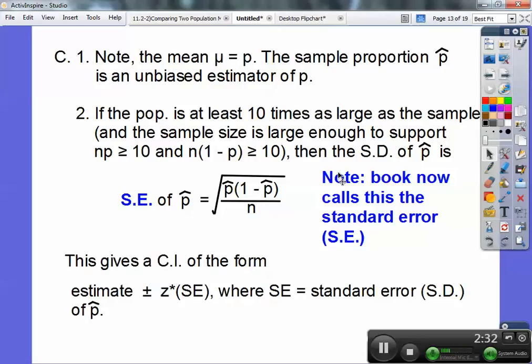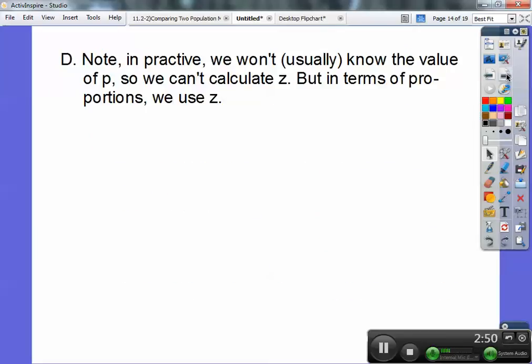So this will give us a confidence interval that's of the form, your estimate, plus or minus your z-score. Now z's coming back into the picture, not t anymore, but z, times your standard error. And your standard error is your standard deviation of your P-hat. Don't worry about that too much. We'll get more of that in our next lesson.